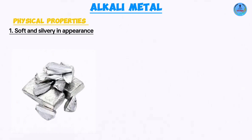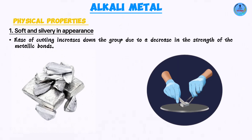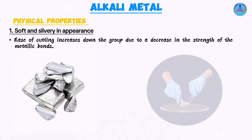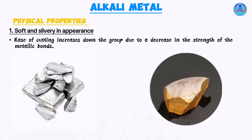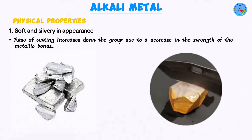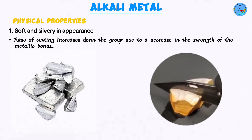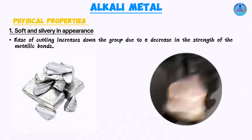Physical property number one: they are soft and silvery in appearance. When it comes to softness, they are so soft you can easily cut them with a knife. The reason is because they have weaker metallic bonds compared to other metals. They are silvery and shiny, but when you freshly cut a surface it easily tarnishes and becomes dull after a short exposure to air.